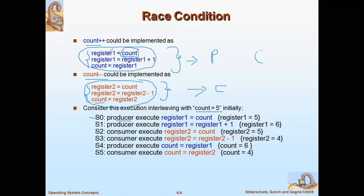When the producer executes, five is given to register one, so register one has five. Then the second line executes: five plus one equals six, so register one now has six. In the third instant we allow the consumer process to execute. Since they are concurrently executing, count is still five for the consumer, so five is given to register two, and five minus one becomes four.